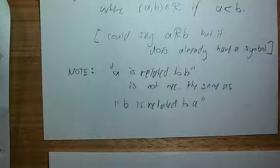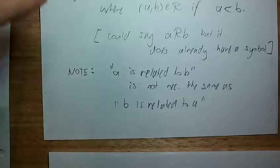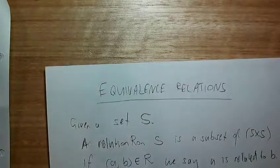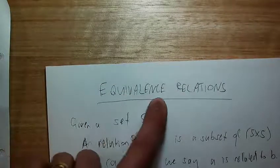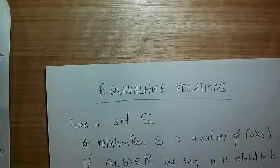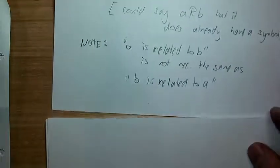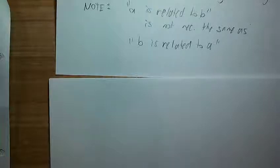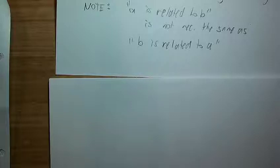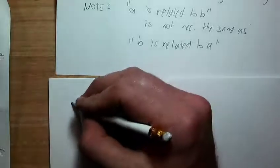Equivalence relations work the same way that 'equals' works. They're called equivalence relations because 'equi' means 'the same' and 'valence' means 'value' — so equivalence relations are talking about things having the same value. Mathematically, what that means is we need to look at relations we like, such as equals, and pull out the most important properties that tell us a relation works the same way mathematically as equals.